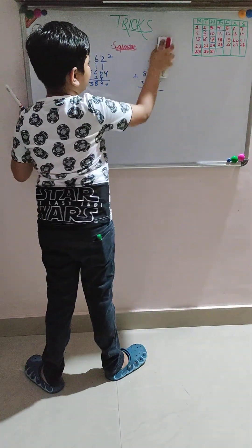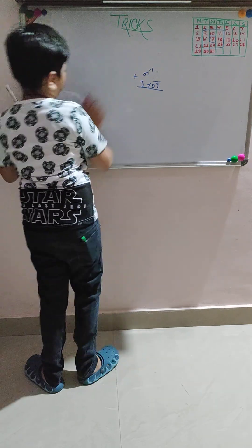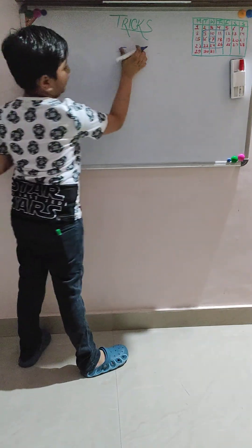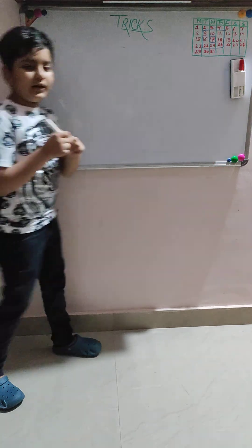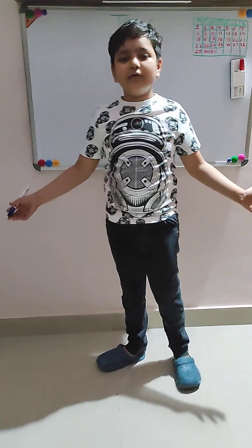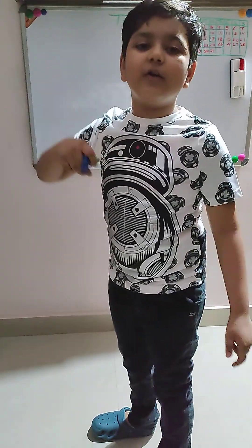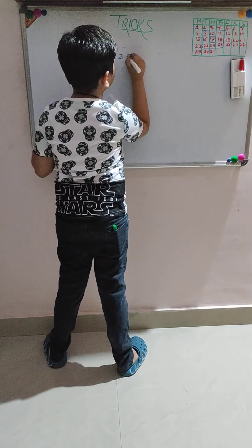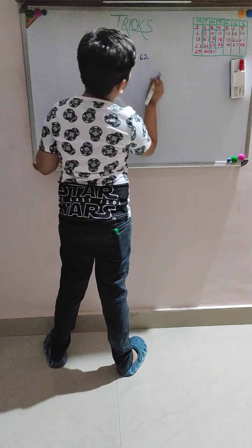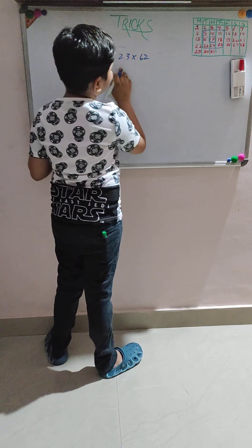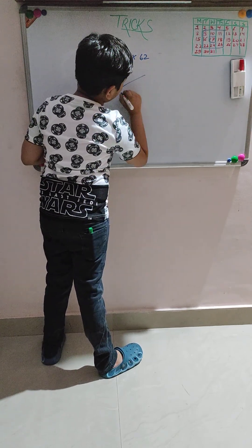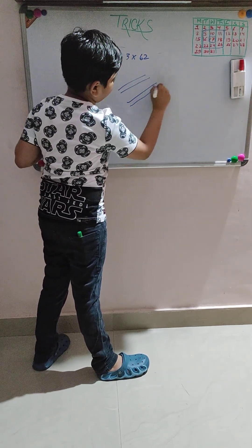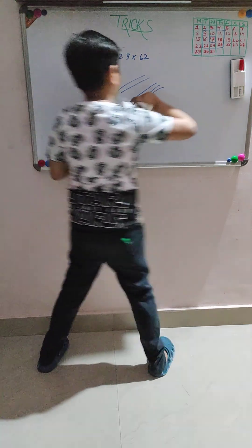Now let's go to the second trick, the third trick. This is Japanese trick. If you have noticed, I am drawing lines. So take some numbers: 23 into 62. Now how do we do it? We will draw for 23.